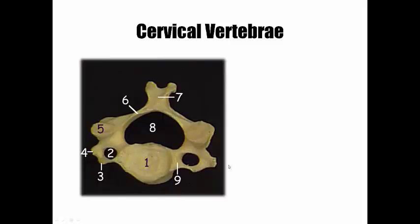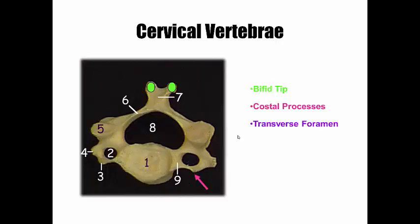Let's look at the cervical vertebra. They're smaller — vertebral bodies are much smaller. They have a bifid tip on their spinous process, so there are two tips. They also have costal processes and transverse foramina, and these are for blood vessels to go through. It's not the intervertebral foramen — these are on individual vertebra, holes bilateral to the vertebral body.